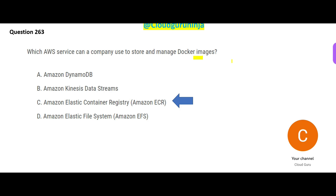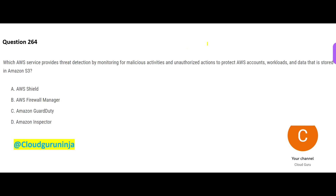Elastic File System is a storage where you can store files, visual pictures, or images — but not Docker images. There is a special service for that. You may ask why not EFS or S3? The answer is: you have to use ECR, which is the dedicated service for Docker images.